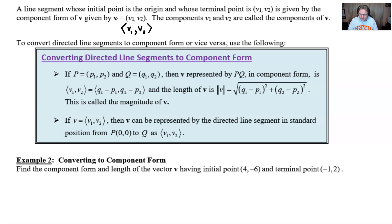So to convert a directed line segment to a component form or vice versa we just really use the following strategy here. Let's say that we have an ordered pair p that consists of the points p1 and p2, the ordered pair q that consists of q1 and q2, then v represented by pq in component form very similar to what we talked about in the previous video is just a matter of subtracting the x value from the destination point. Remember we're going from p to the destination q, minus the x value of the original or starting point and so that's why we have this q1 minus p1 right here and then the y component is treated the same way q2 minus p2.